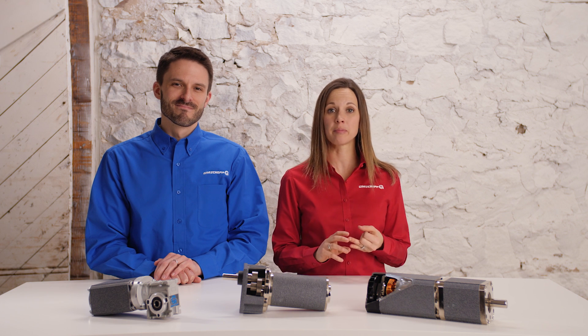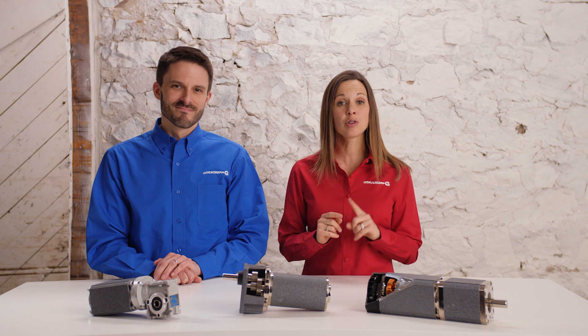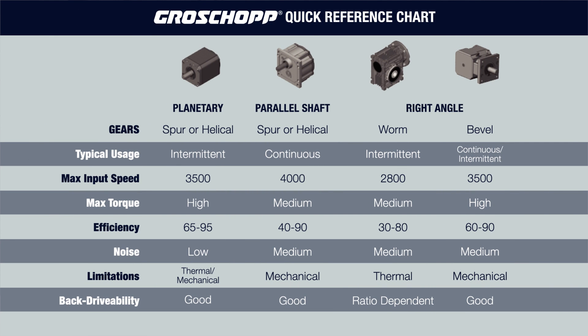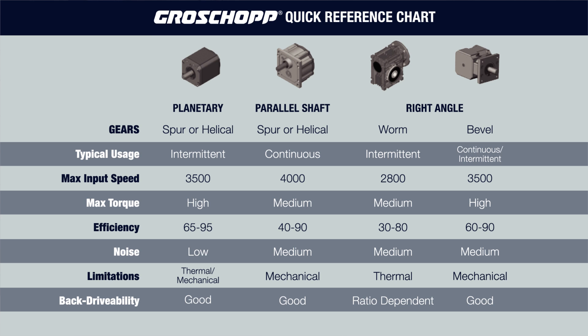Criteria such as maximum input speed, maximum output torque, and efficiency are the first most designers think of. This reducer reference chart, to which we've provided a download link below, can be used as a starting point in selecting the optimal gearbox for your application. As you look at this chart you will see the most common criteria listed in the left column.